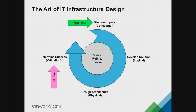We'll cover the design methodology, which has four phases. There's a discovery phase where we identify inputs — the conceptual design area. We then develop a solution at the logical design level, followed by the physical design where the architecture is built — the engineering aspect. The final stage is validation. This is a standard process applicable across many work environments.